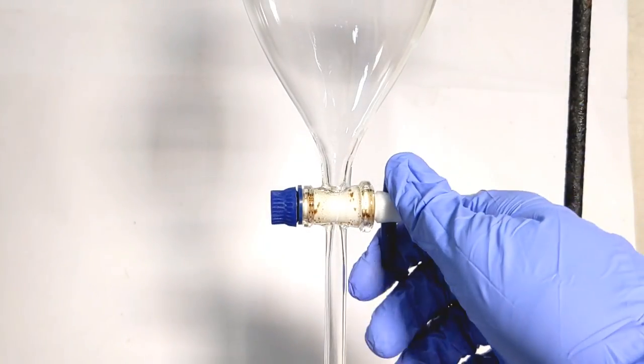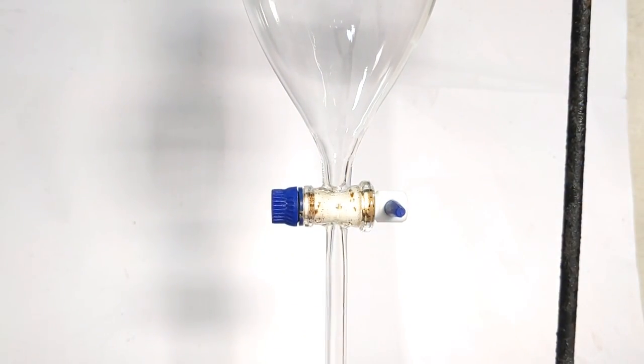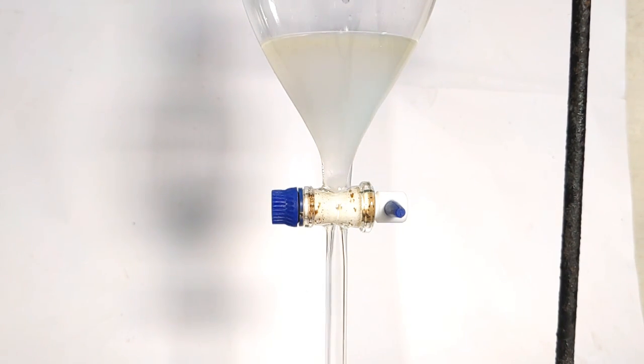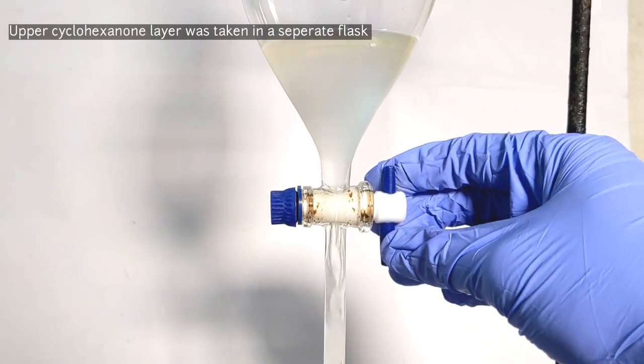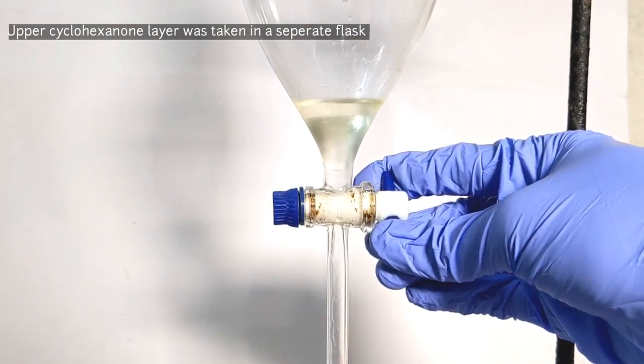Now a separatory funnel was clamped and closed and the mixture was poured into it. Don't forget to close the knob of the separatory funnel before adding the substance, as that could be the end of your whole project. Allow it to stand undisturbed for few minutes and let the layers separate. Always make sure you have removed the cap of the separatory funnel before opening the knob.